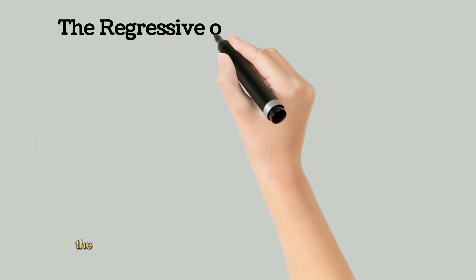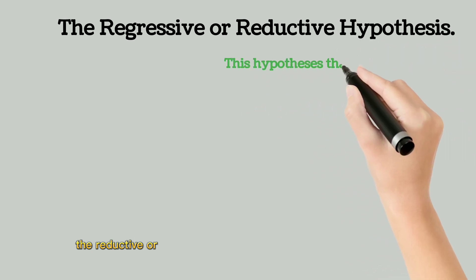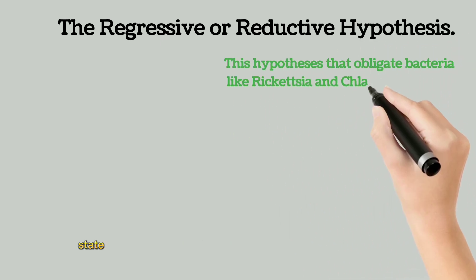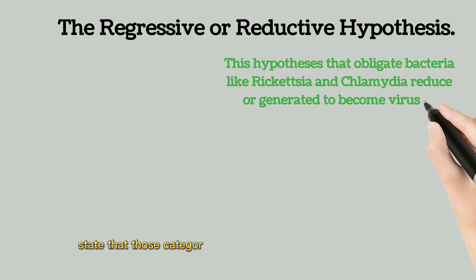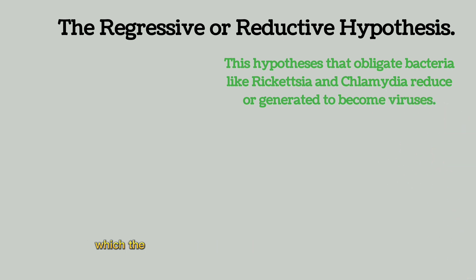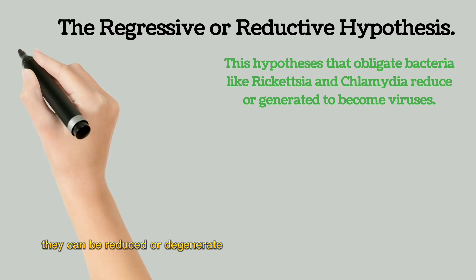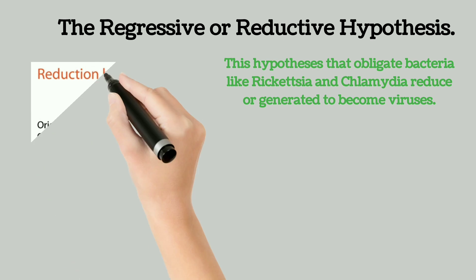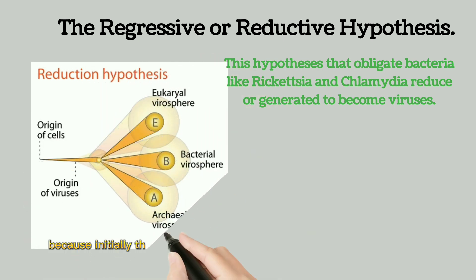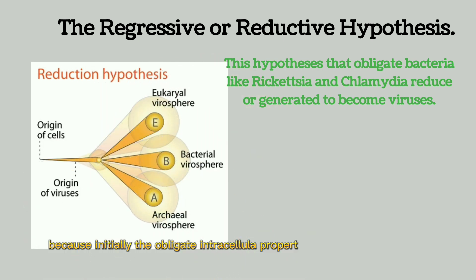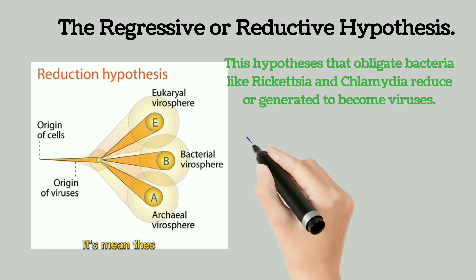The reductive or regressive hypothesis states that those categories of bacteria which are already obligate intracellular bacteria, like Chlamydia, can be reduced or degenerated to form viruses. Because initially, the obligate intracellular property is a property of viruses. By this hypothesis, this category of bacteria degenerates to form viruses.